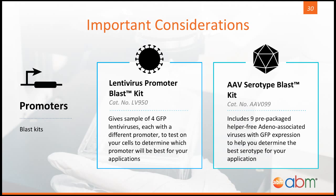Usually when I receive a new cell line in our lab that I don't know much about, nor is there much documented research on that cell line, I have to figure out on my own which promoter would be best. ABM actually has a lentivirus promoter blast kit that does just that — it comes with samples of four GFP lentiviruses, each with a different promoter, to test on your cells to determine which promoter would be best for your application. Similarly, we have the same thing for AAV vectors: a serotype blast kit which includes nine different serotype AAV viruses with GFP expression to determine which serotype is right for your new cell line of choice.